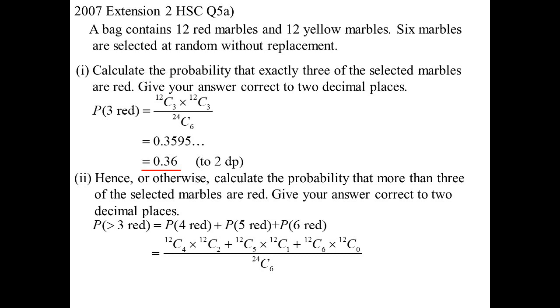Or, so we add, from the red ones I'm going to choose five times from the yellow ones I'm going to choose one. Or I'm going to choose six from the 12 red ones and none from the 12 yellow ones. And all of that turns out to be 0.32.